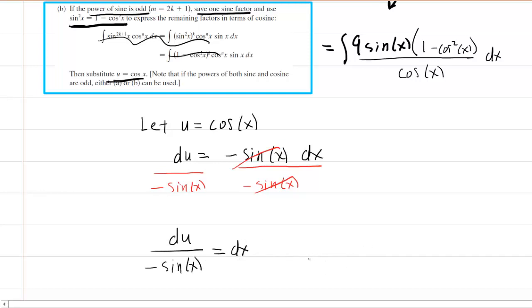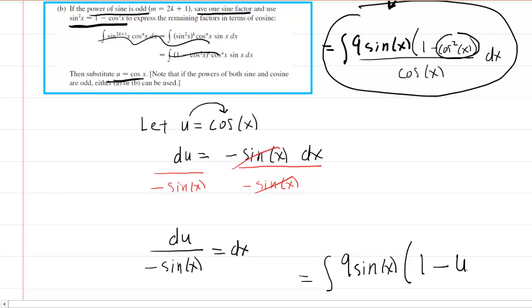Continuing on with this u substitution, we're going to make substitutions now. So recall that we're looking at this expression when making our substitutions. We're going to have the integral of 9. Now, the sin(x) is still present here. That's being multiplied by 1 minus—now, remember, for cosine squared, we had let u equal the cos(x). So that means that the cos²(x) would just be u². And then this is divided by the cos(x), which again is just u. And then at the end, you're multiplying by dx.